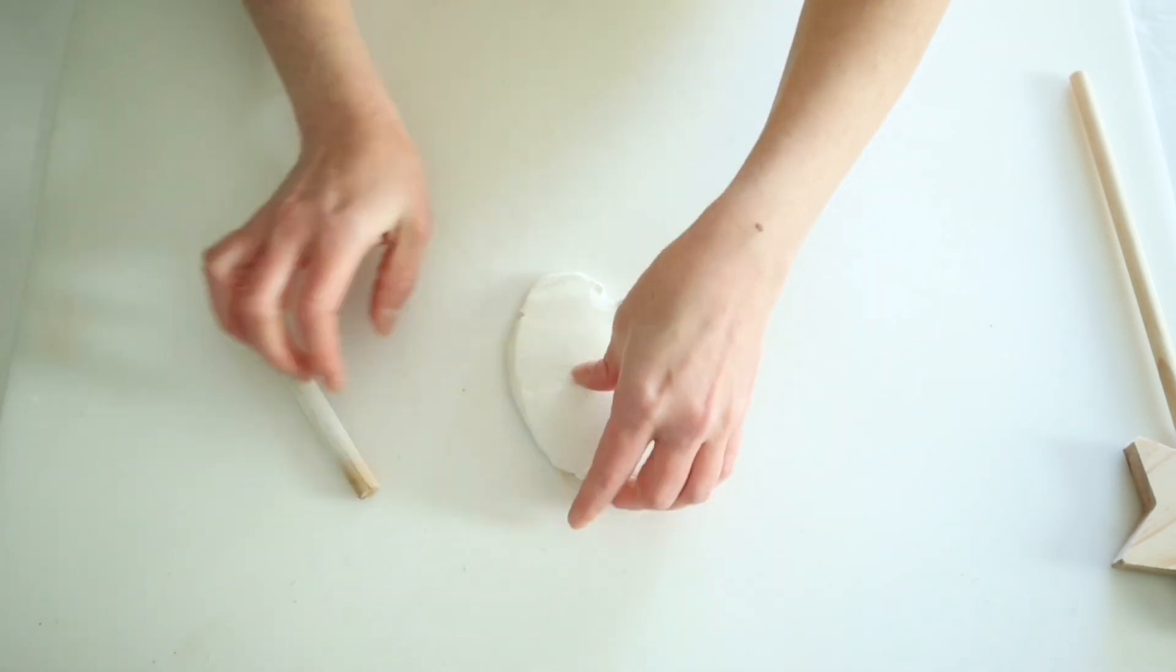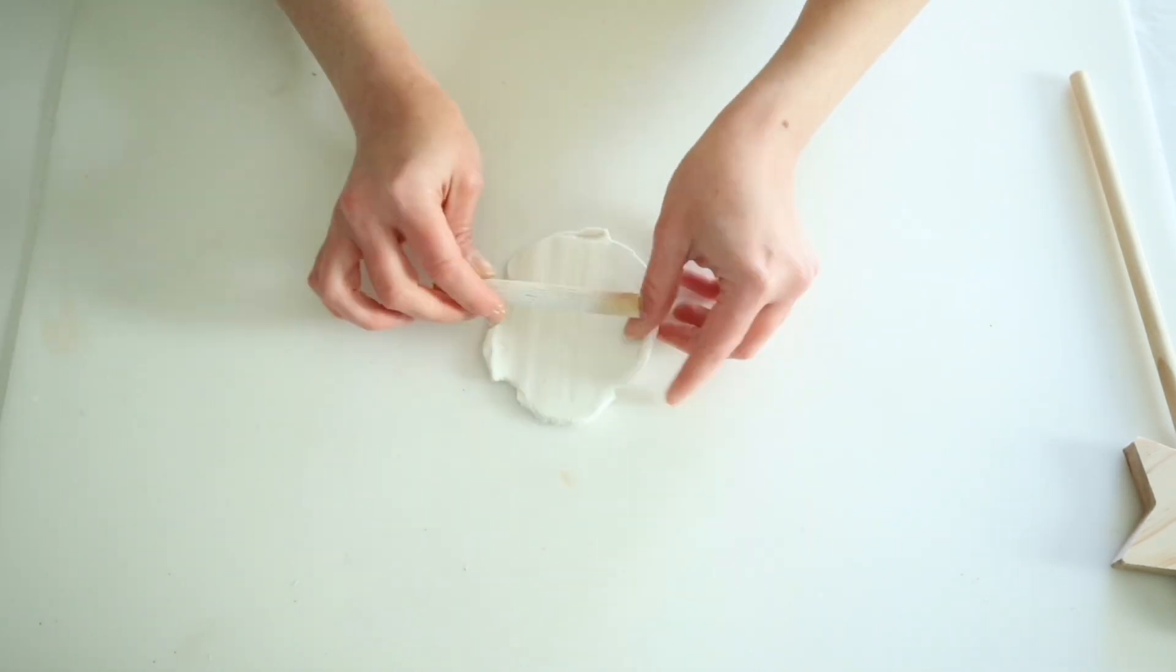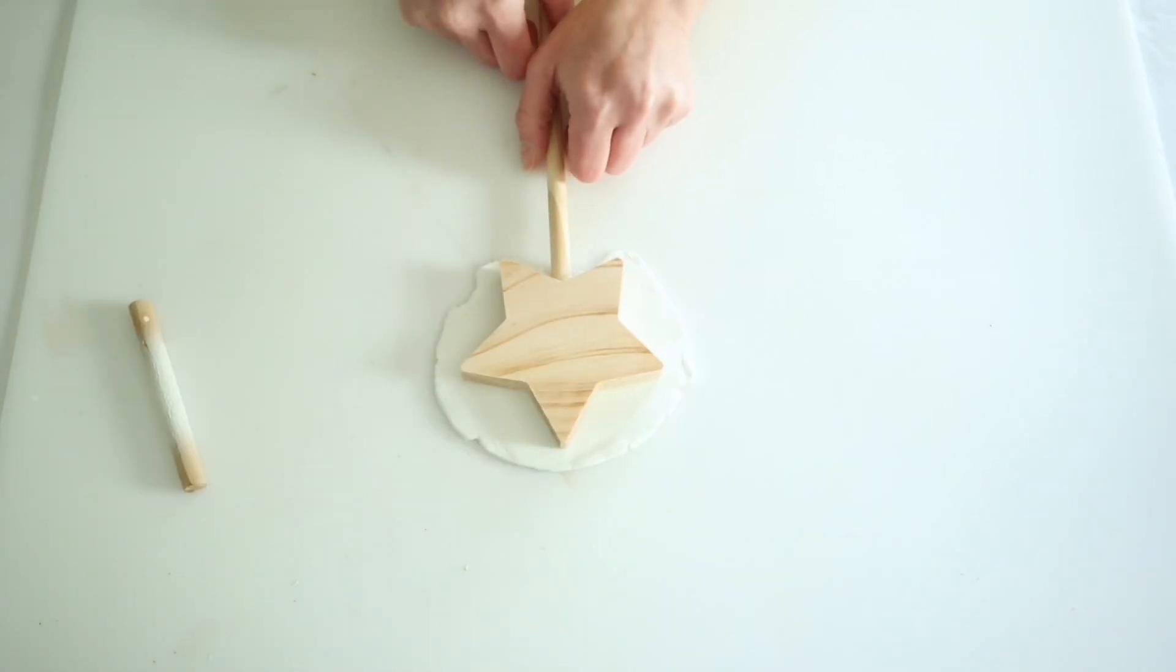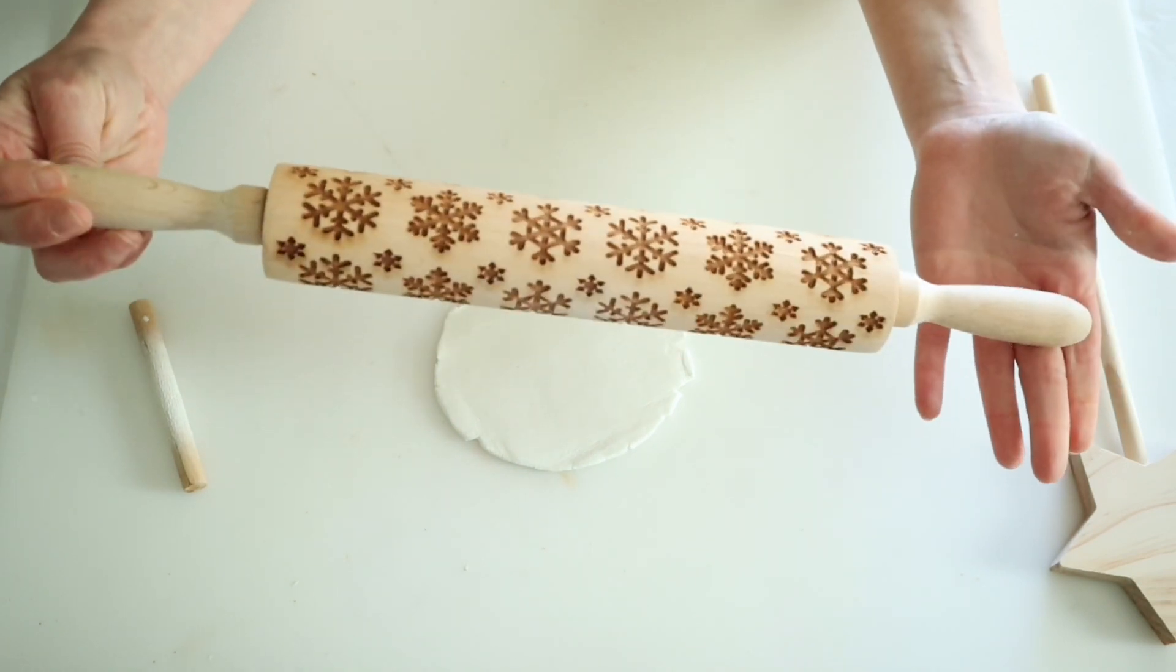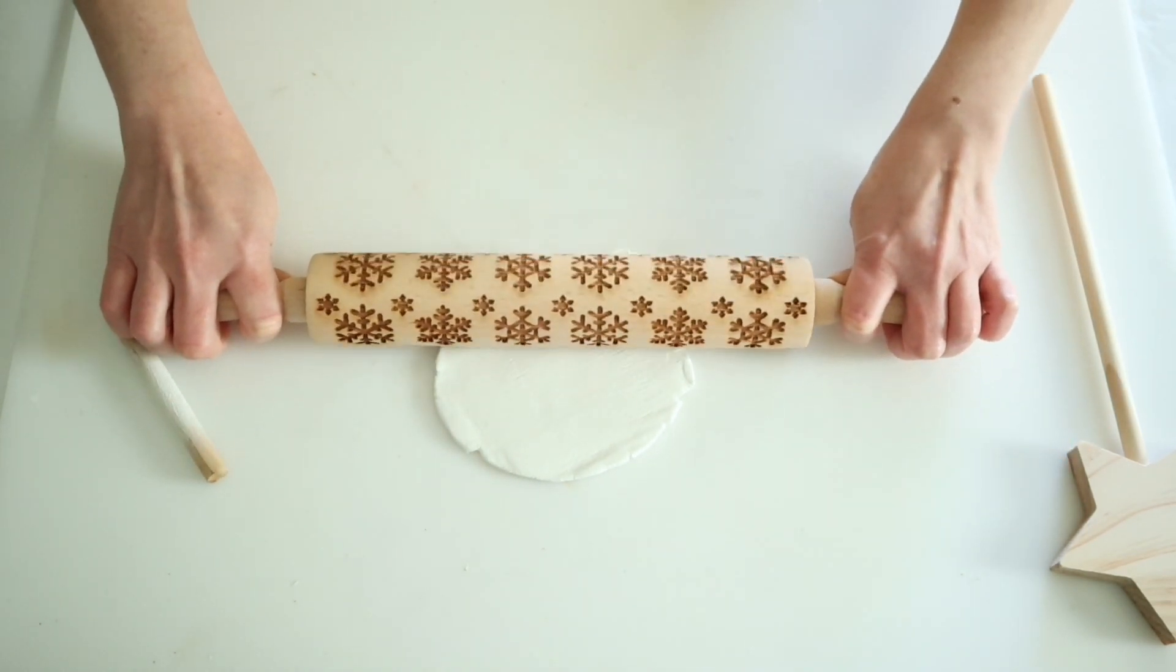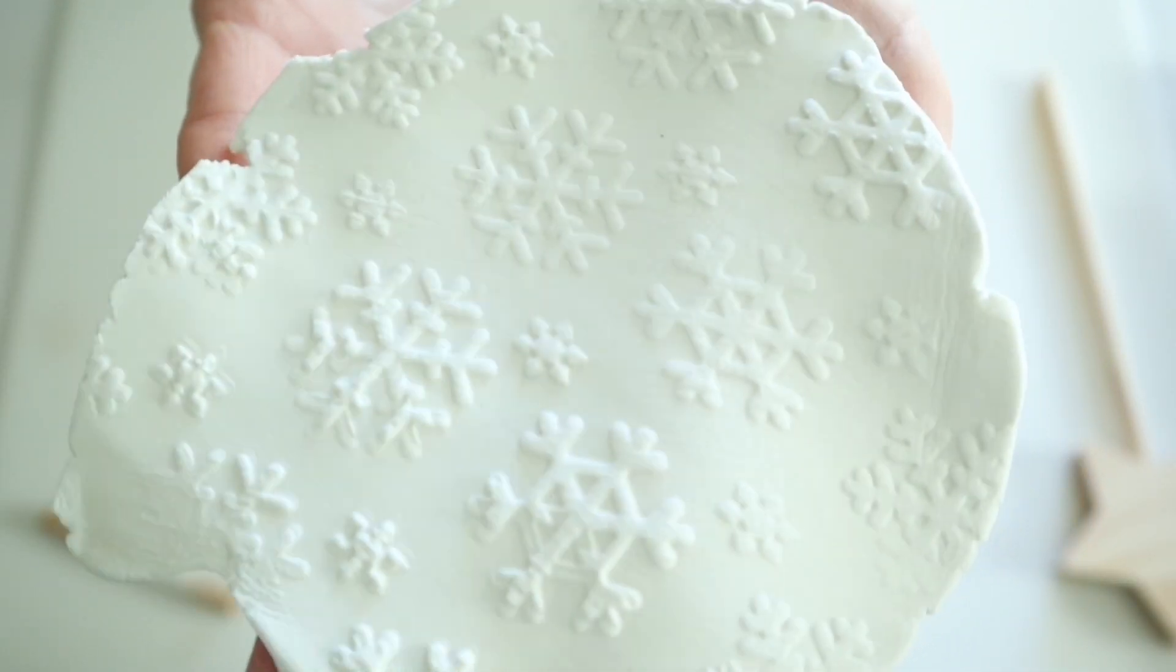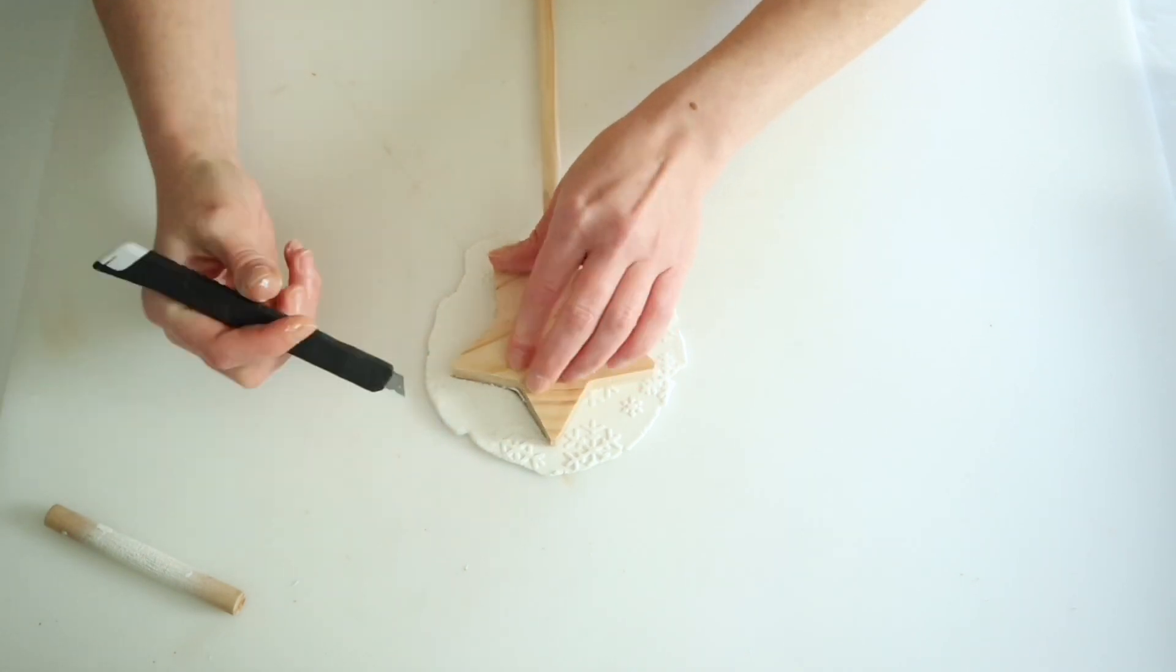I'm going to go ahead and take a piece of my clay and roll this out. I just wanted this to be big enough to cover the star, so I just rolled that out a little bit and then I checked to make sure that it would cover the star. But then I have this really cute snowflake roller that I got on Amazon. Again, everything's linked below, but I'm just going to roll this piece out with that snow roller and then I will cut the star out.